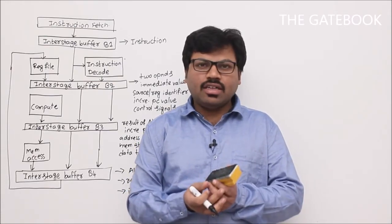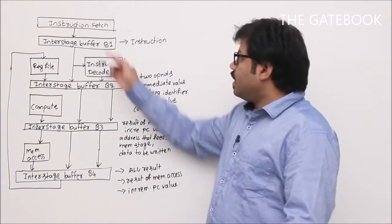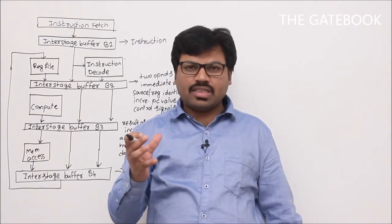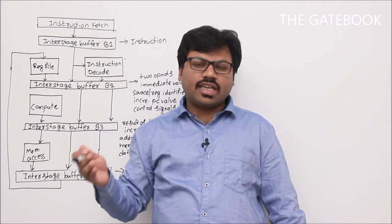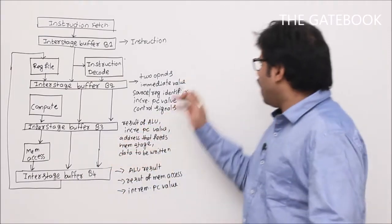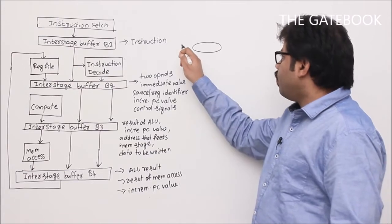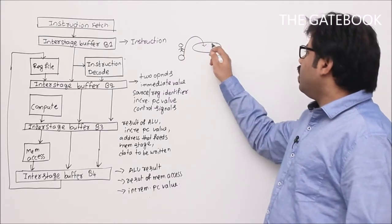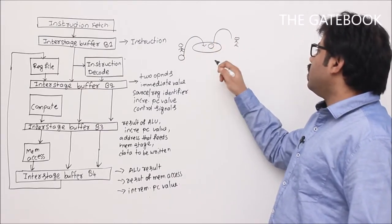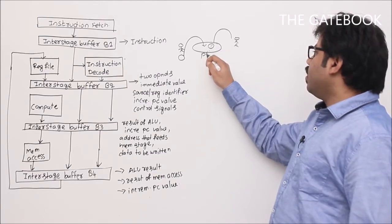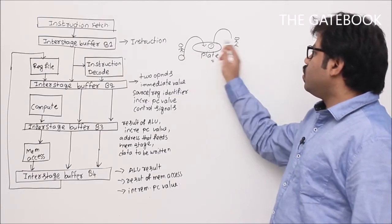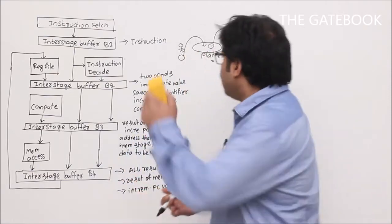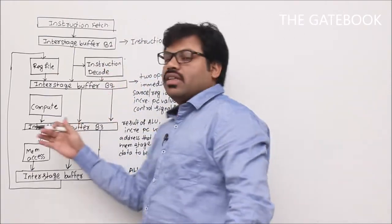One important thing in pipelining is buffers. In the roti-making analogy, stage one prepares a ball that should be forwarded to the second person. What if that second person is busy? They can use a plate in between — the first person places the ball on the plate, and the second person takes it from there. The plate works as a buffer, so these two stages can work without any disturbance.